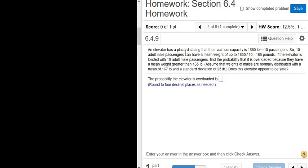An elevator has a placard stating that the maximum capacity is 1,650 pounds, or 10 passengers. So 10 adult male passengers can have a mean weight up to 165 pounds. That's the maximum capacity of the elevator. If the elevator is loaded with 10 adult male passengers, that's going to be our n in this problem. So that's our sample size.